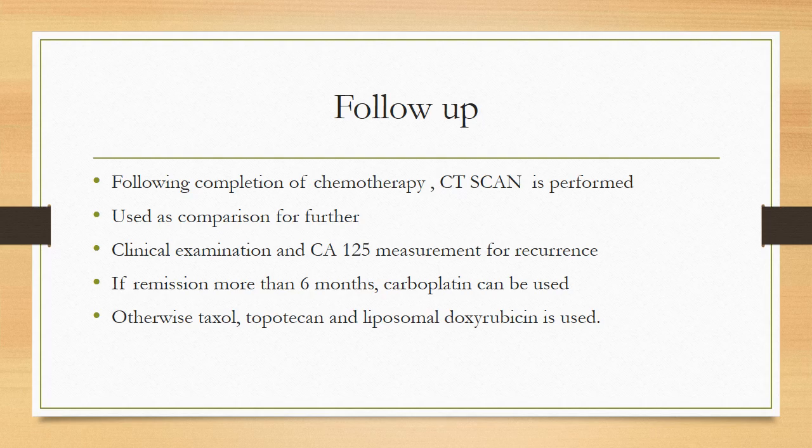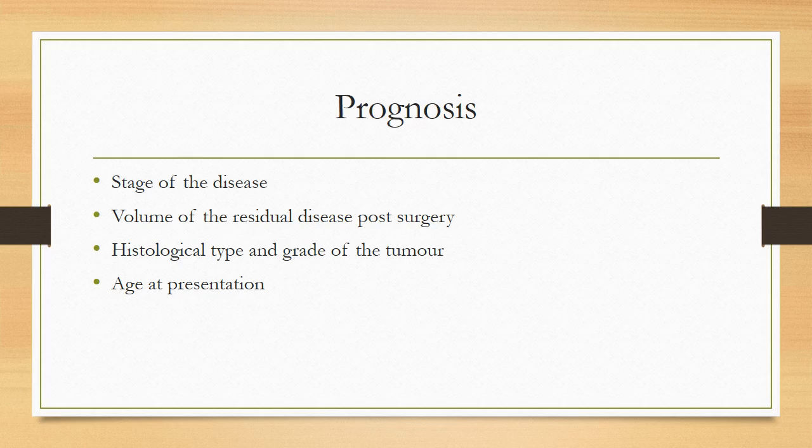This CT scan can be used for comparison in the future if there is clinical or biochemical evidence of recurrence. Follow-up includes clinical examination and CA125 measurements — studies have shown CA125 levels start rising before clinical evidence of disease. When disease recurs, treatment is largely palliative. If duration of remission is more than 6 months after chemotherapy, we might choose carboplatin again; otherwise, taxol, topotecan, or liposomal doxorubicin is used. Prognosis depends on stage, volume of residual disease post-surgery, histological type and grade, and age at presentation.